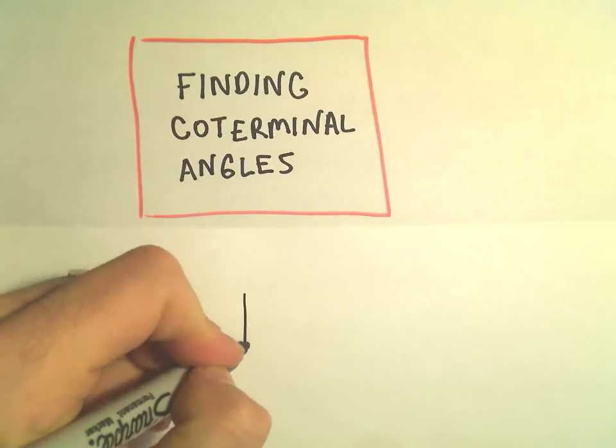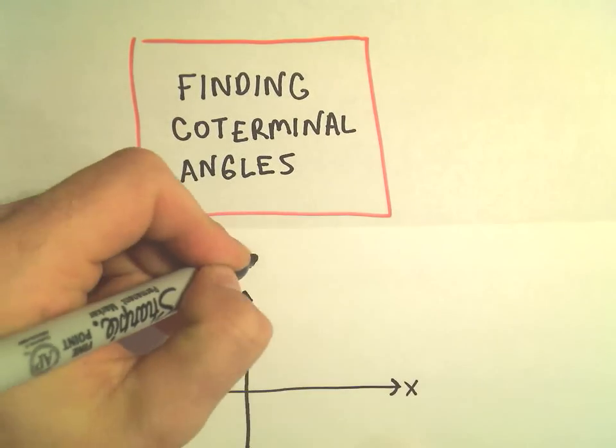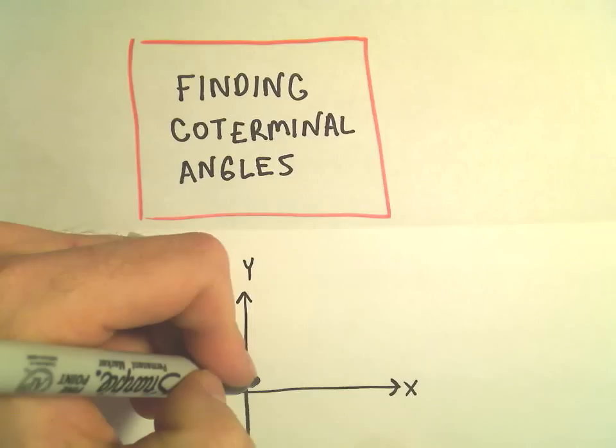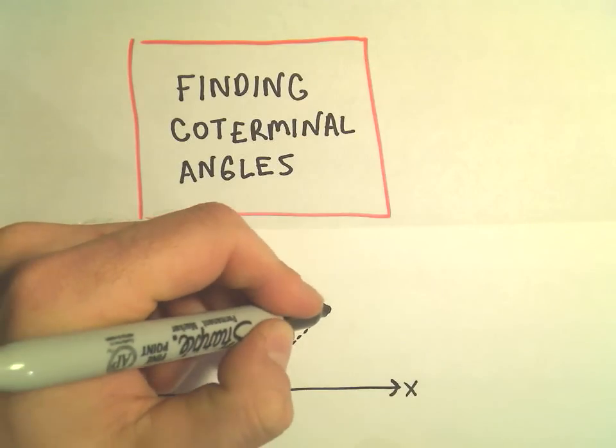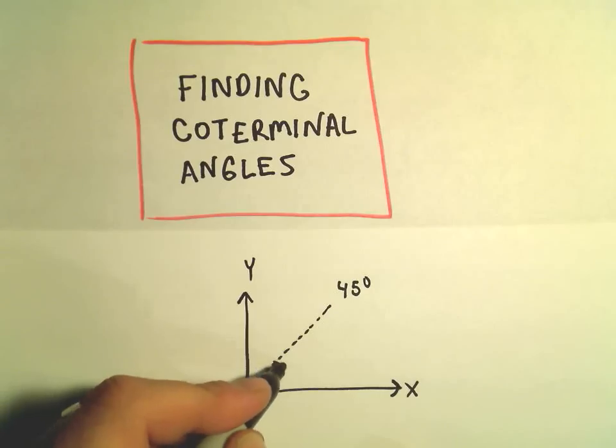Well again, let's just take a quick little example here. So here's x, here's y. Suppose we find the angle say 45 degrees. It's going to be kind of halfway through our first quadrant here.